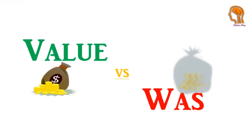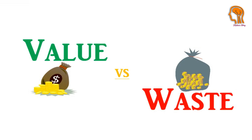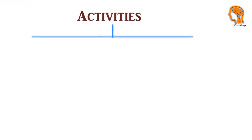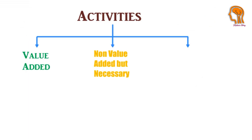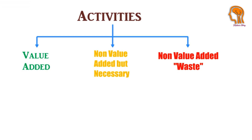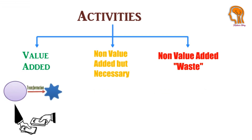Now let's know the difference between value and waste. Value is classified into three main categories. The first category is value-added activities. The second category is non-value-added activities but necessary. The third category is non-value-added activities, which is called waste. Value-added activities means any activity that transforms or shapes a product or service into a final form that the customer is willing to pay for.